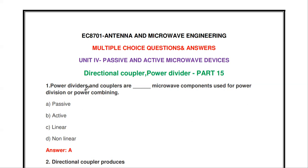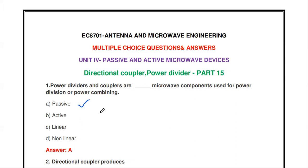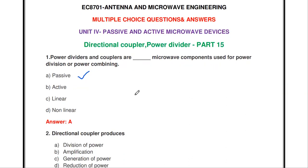First question: power dividers and couplers are blank microwave components used for power division or power combining. The answer is passive microwave components. Power dividers and couplers are passive microwave components used for power division and power combining.